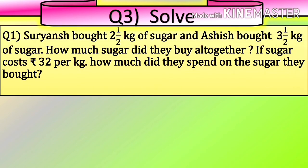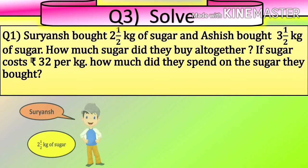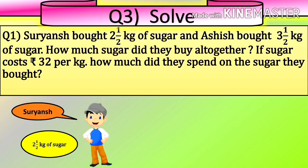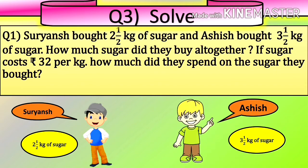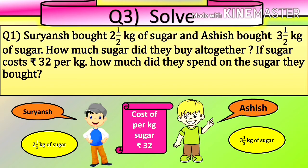Our question is: Suryansh brought 2½ kg of sugar and Ashish brought 3½ kg of sugar. How much sugar did they buy altogether? If sugar costs Rs. 32 per kg, how much did they spend on the sugar they brought? Here, students, we have to do addition of mixed numbers — the sugar brought by Suryansh and Ashish — and after that find the total cost.